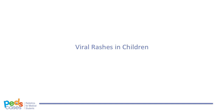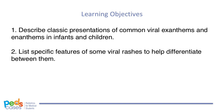In this Pete's Cases podcast, we will discuss viral rashes that can present in a child under the age of two or in school-age children. The learning objectives of this podcast are: number one, describe the classic presentations of common viral exanthems and enanthems in infants and children; number two, list specific features of some viral rashes to help differentiate between them.